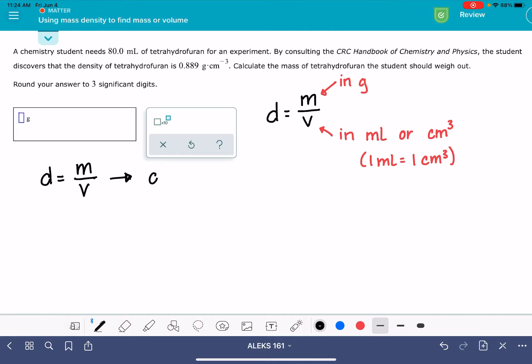One way that we can write the density equation is density times volume equals mass, and this would be useful if we knew the volume and we were trying to calculate the mass.